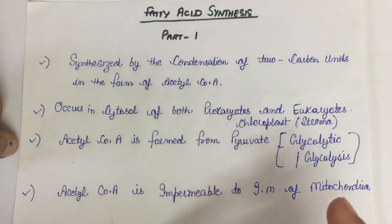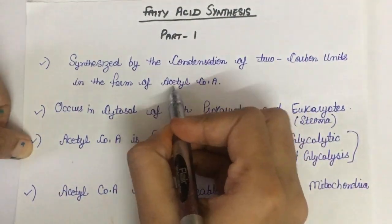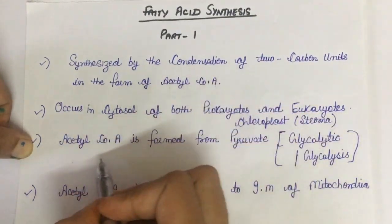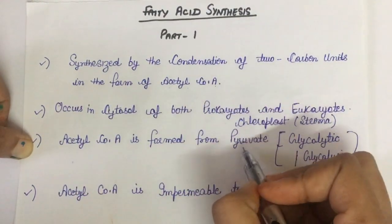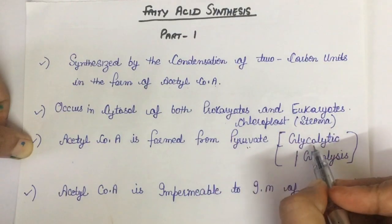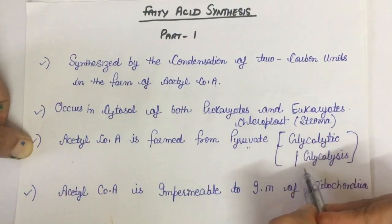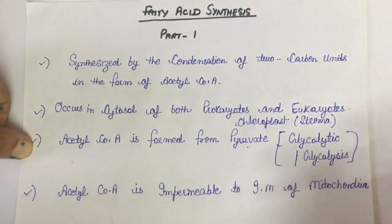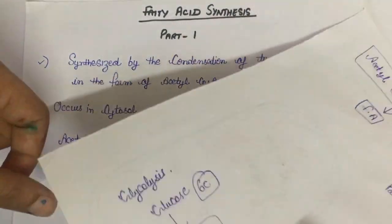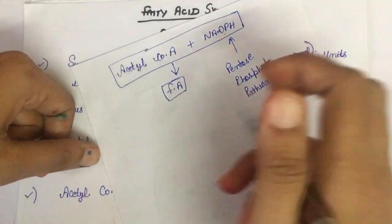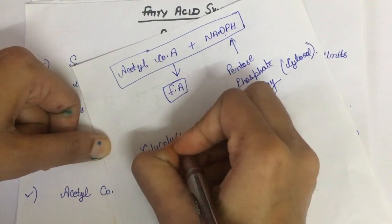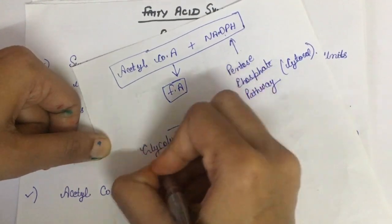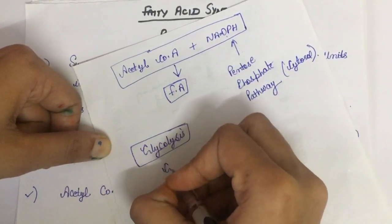In the case of plants, fatty acid synthesis occurs in the chloroplast, that is in the stroma. Acetyl coenzyme A is formed from pyruvate, and pyruvate is the end product of the glycolytic pathway or glycolysis. In glycolysis, glucose is split into pyruvate.